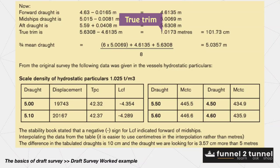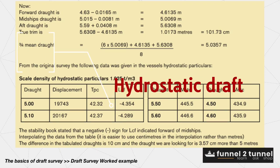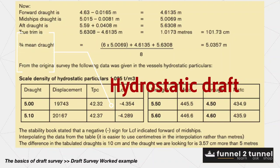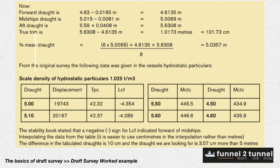We now obtain the true trim by subtracting the corrected aft draft from the corrected forward draft. To obtain the displacement of the vessel, we first need to know the hydrostatic draft. The hydrostatic draft is calculated using the formula: hydrostatic draft = (forward draft + aft draft + 6 × midship draft) ÷ 8.